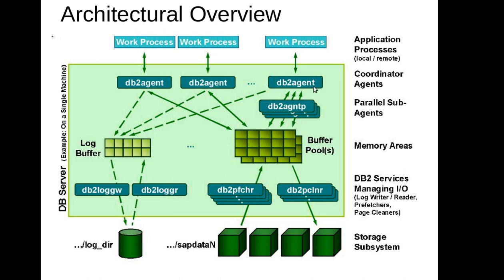So let's imagine you have the application process. Then you have the DB2 agent, DB2 sub-agents, a buffer pool, log buffer, and some other processes. The work process is an application process which takes the application request from the application and passes it on to the DB2 agent. Now DB2 agent basically takes the request from the work process and does all the processing. Depending on the workload it might have to spawn some sub-agents as well.